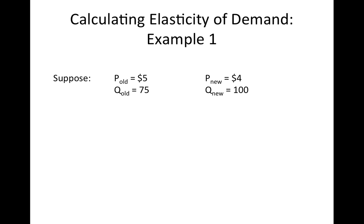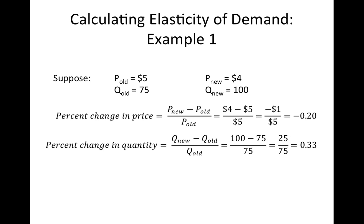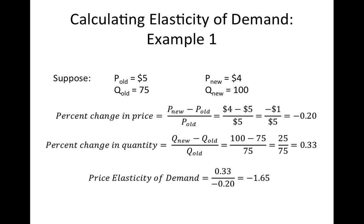In this first example, you simply have the old and new prices and quantities of the good. To calculate the price elasticity of demand, we simply substitute these numbers into our percentage change formulas. When we do this, we see that the price fell by 20% and the quantity demanded rose by 33%. Therefore, the price elasticity of demand is 33% divided by 20%, or 1.65. In words, this number means that if the price rises by 1%, quantity demanded will fall by 1.65%. Note that because we will always get a negative number, we usually drop the negative when referring to this elasticity.